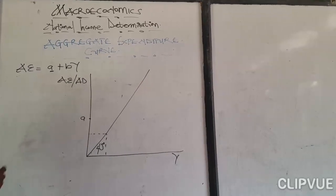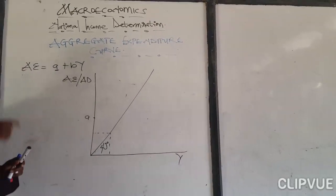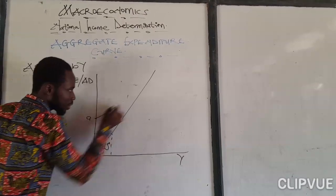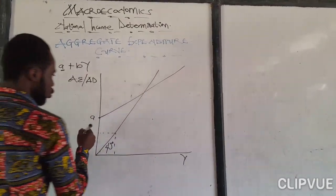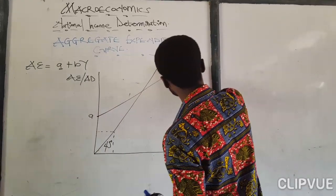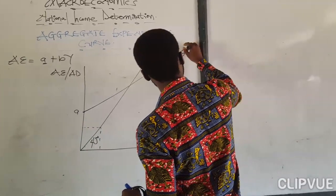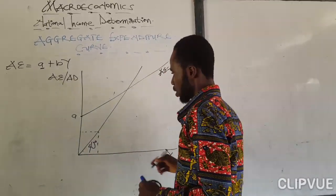Now we are saying that when you draw it like this, draw it in such a way that it will cut the 45 degrees line. So we are drawing it to cut the 45 degrees line. So the expenditure, here will be the expenditure. Aggregate expenditure function a plus bY.